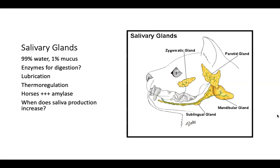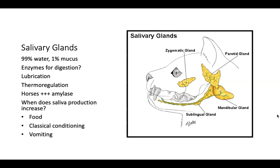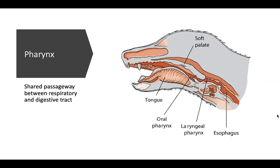Salivary glands can also assist with thermoregulation. Saliva production increases significantly when food is present, based on classical conditioning — as in Pavlov's dogs: the animal anticipates eating and produces copious saliva. Some cats salivate when they're happy and purring. Animals also salivate when they're about to vomit.